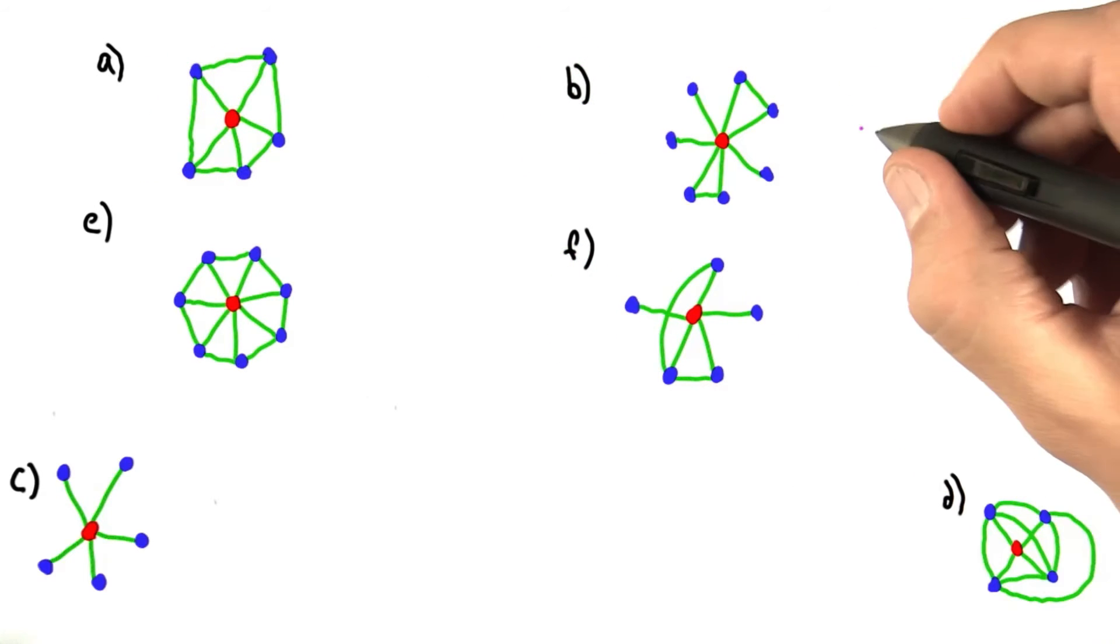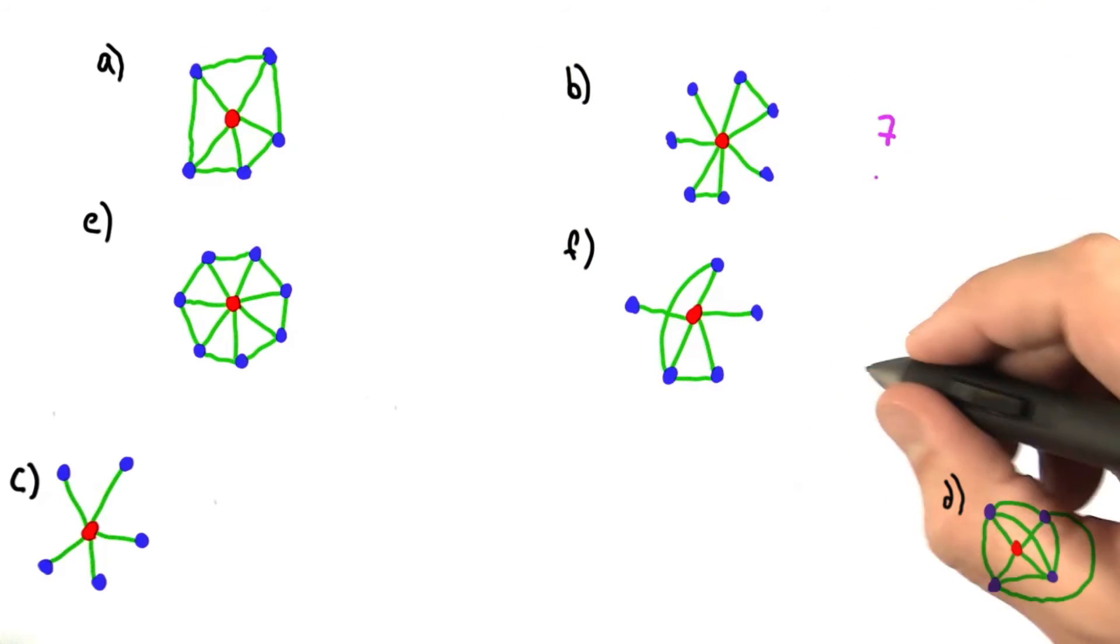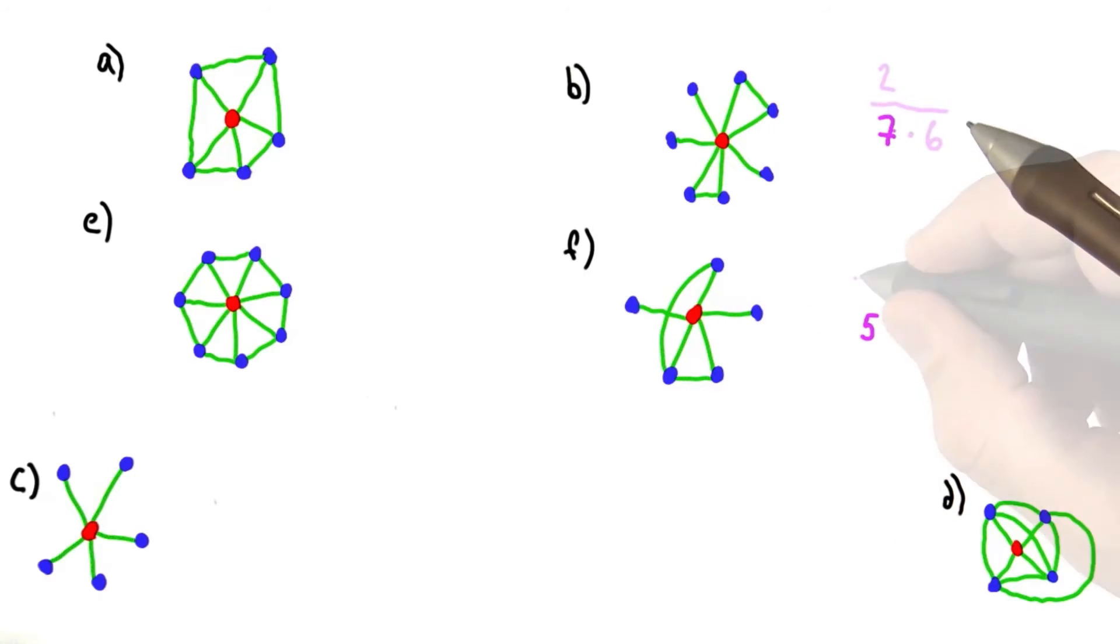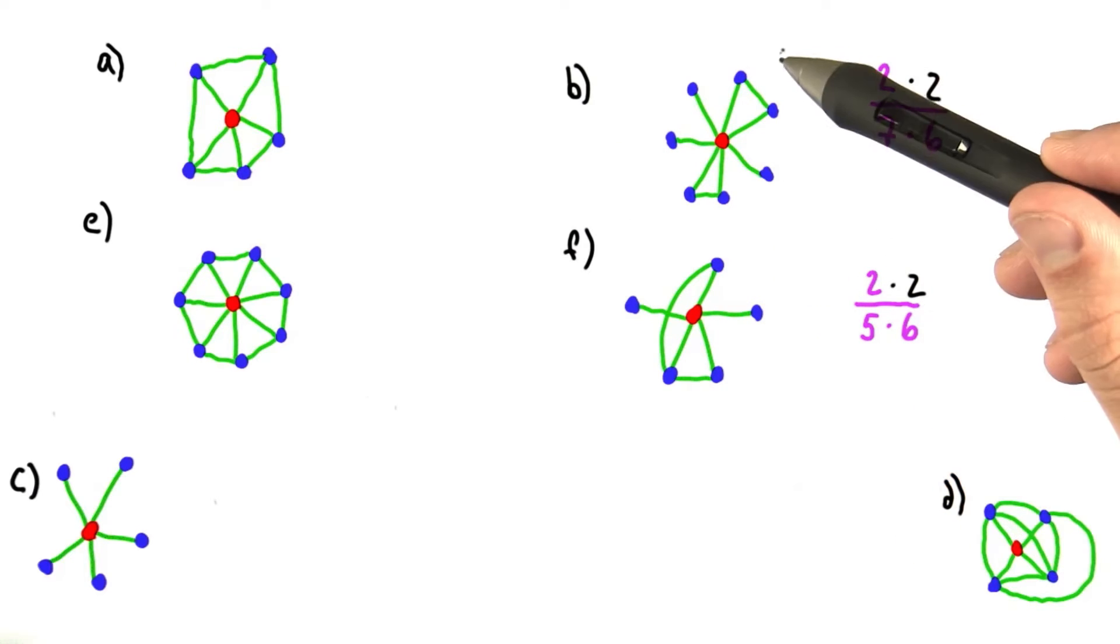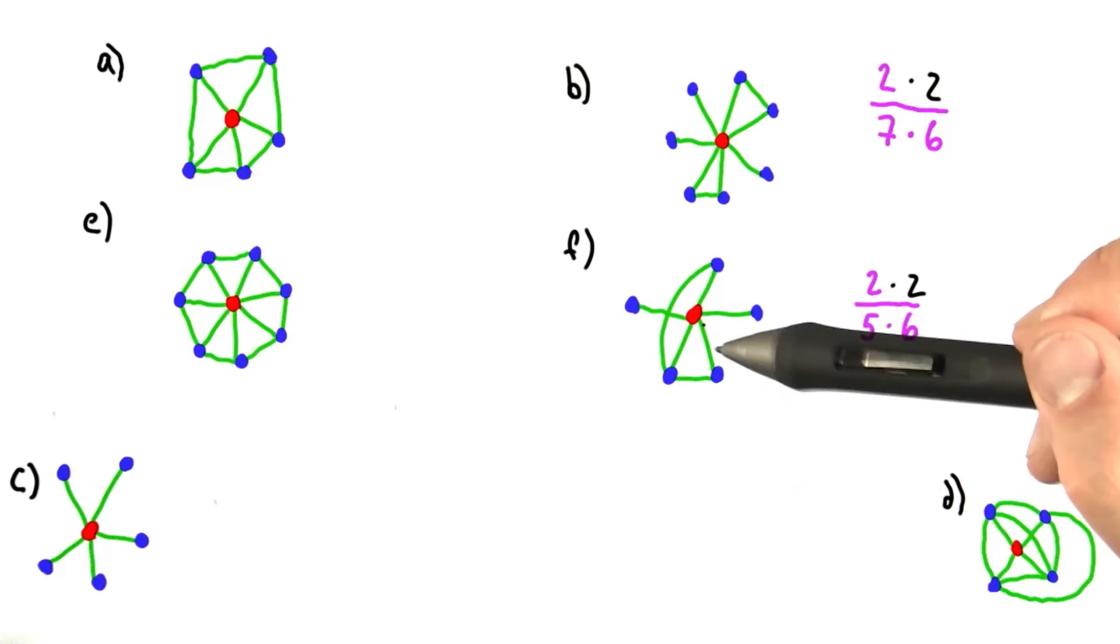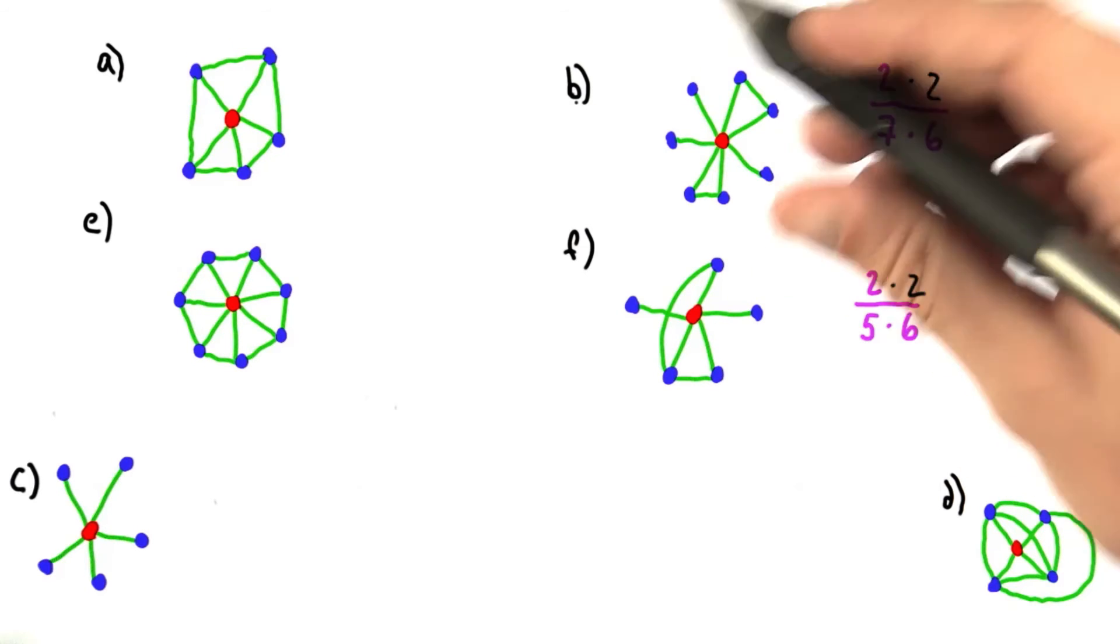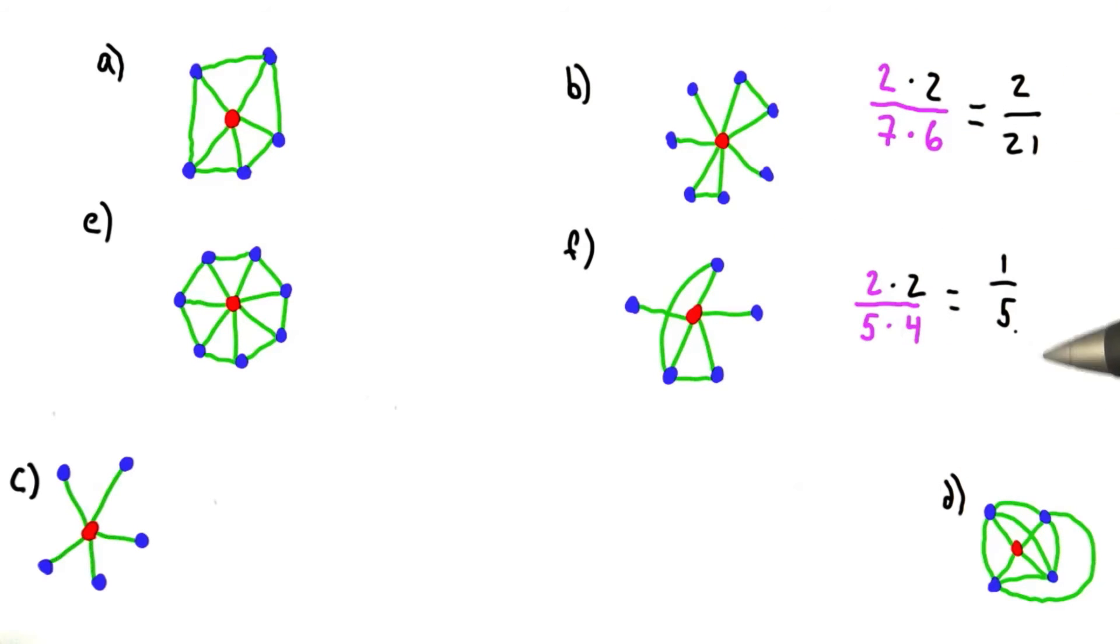Intuitively, since B has seven neighbors and F has five, B has a larger clique and F has a smaller clique. And since they both only have two neighboring edges and B has the larger clique, actually calculating the clustering coefficient, we can see that yes, B is smaller than F.